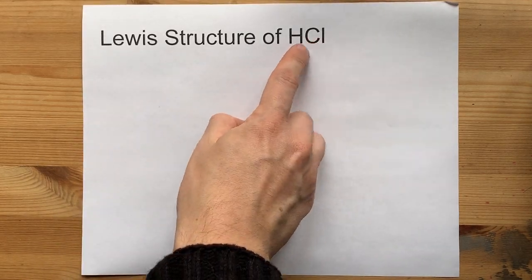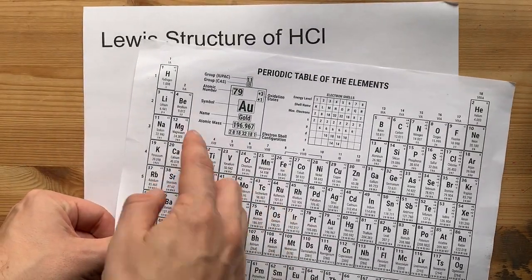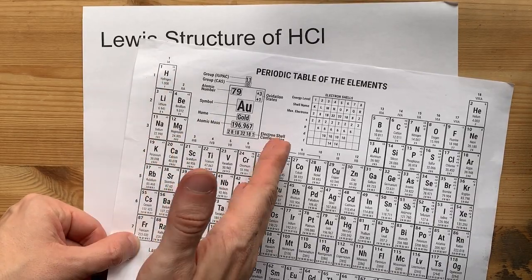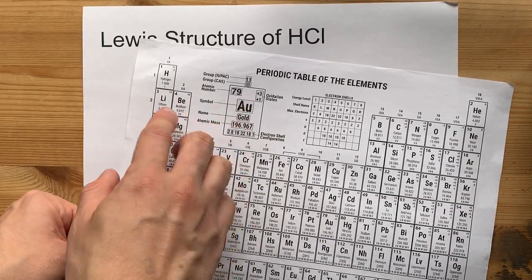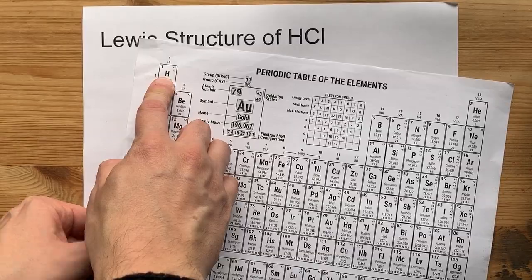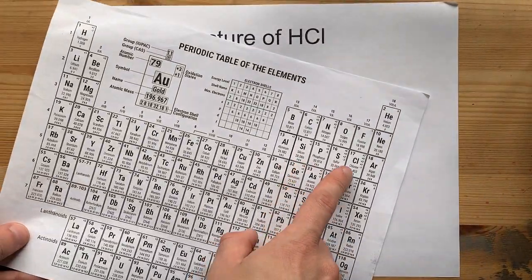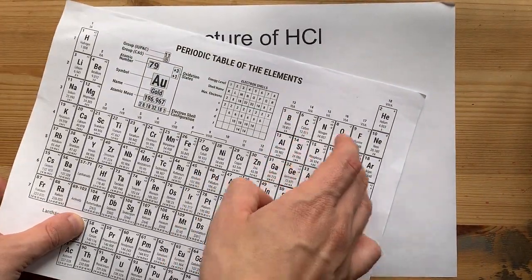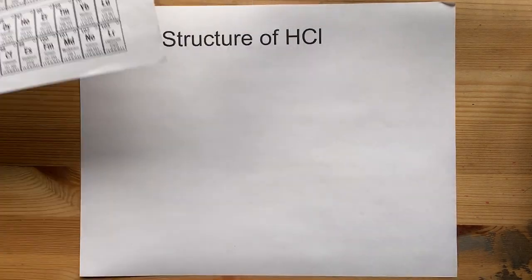Lewis structure of hydrogen chloride, HCl. Hydrogen is a non-metal, even though it comes from the left side of the periodic table. And so is chlorine. Chlorine comes from the right-hand side of the staircase, so it's obviously a non-metal.